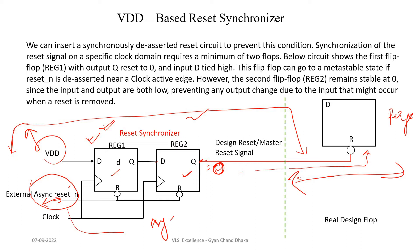Now, what happens during reset deassertion? During reset deassertion, the input of the first flip-flop is connected to VDD — let's say this is logic one. During reset state, this point is zero and this is also zero. So when the reset deassertion happens, the clock signal of this flip-flop takes control, and now the data input D will be propagated to the output of the flip-flop, or the flip-flop will remain in the reset state.